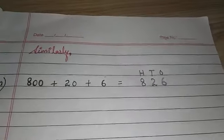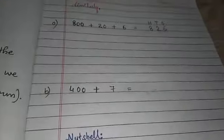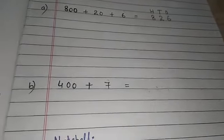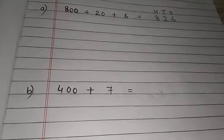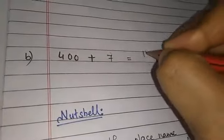Now see, over here, you have to similarly do sum number 2. In sum number 2, you can find 400 plus 7. Very first thing, write down the place of the number.